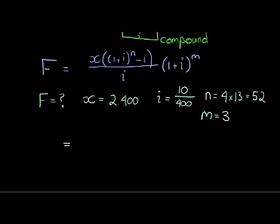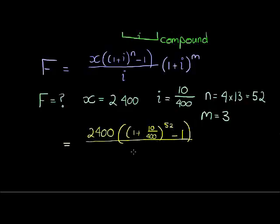So, in substituting, we get 2400, one plus 10 over 400, to the power of 52 minus 1, all over 10 over 400, and then this whole thing is multiplied again with the bracket, one plus i, 10 over 400, this time only to the power of 3.